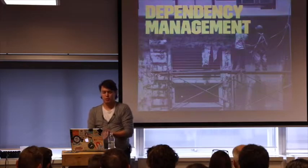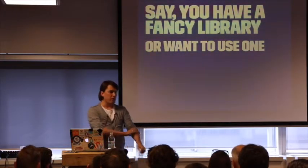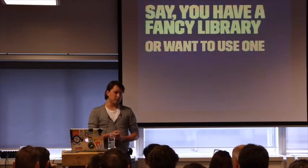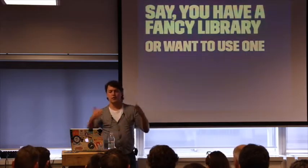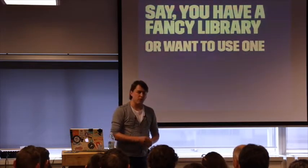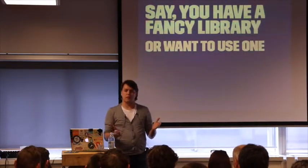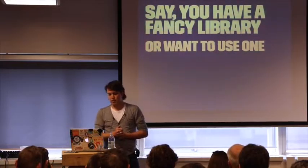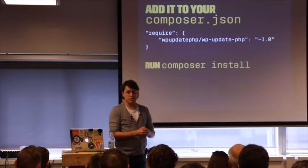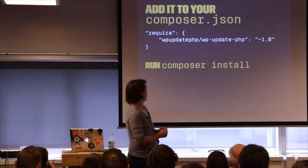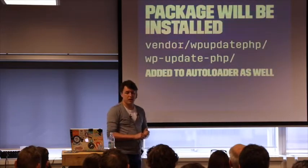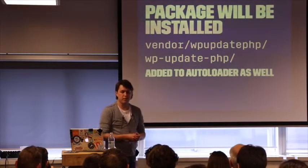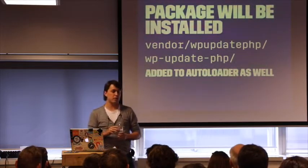On to the meat of Composer. Say you have a fancy library — a PHP package, a database connector, it can be anything — and you want to use it in multiple plugins. For example, let's look at a premium plugin updater. Every major premium plugin vendor has one they can use to update their plugins with if they're not in the WordPress.org repository. You just add it to composer.json and run composer install, and the package will be added to the vendor directory and to your autoloader as well.